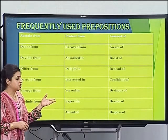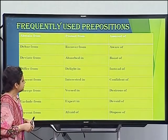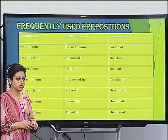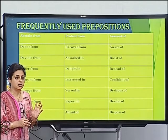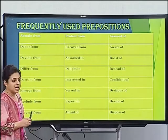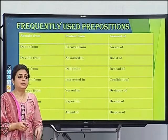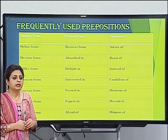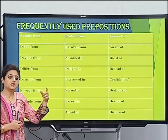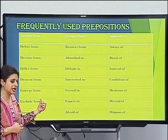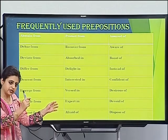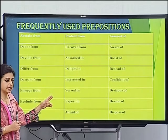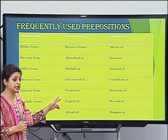'Instead of.' 'Confident of' — I am confident of my performance. 'Desirous of' — I am desirous of doing post doctorate. 'Desirous' means when you are eager for something. Generally 'desirous' takes 'of' after it. But always remember — never blindly follow the rules.